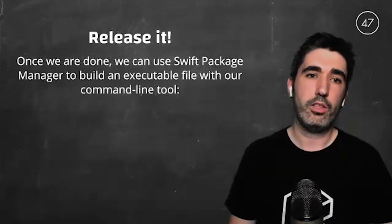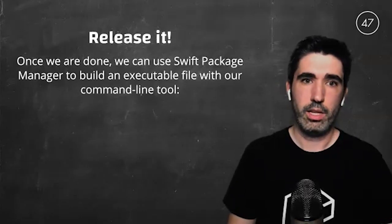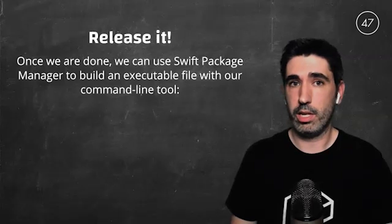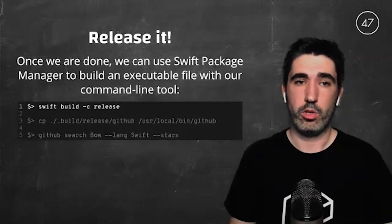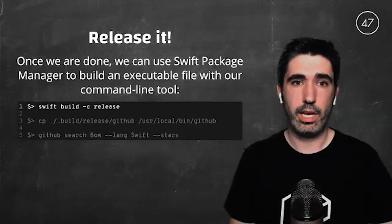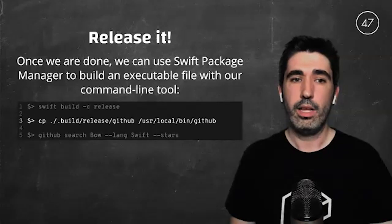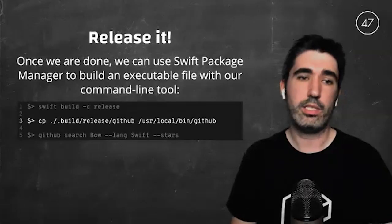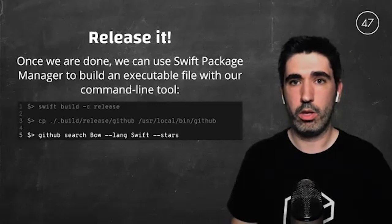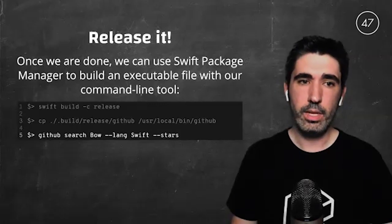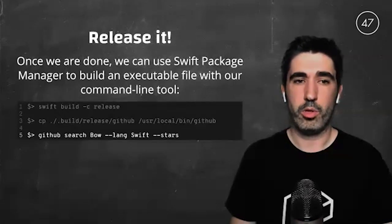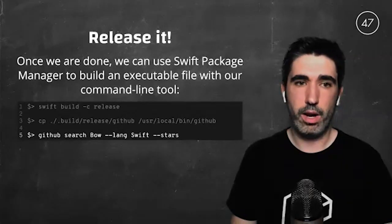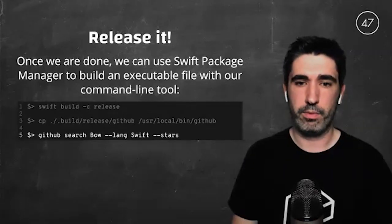We are finally done with our tool and now we want to release it. We can use the Swift Package Manager to build an executable file by running `swift build -c release`. It will create a binary file under the hidden `.build/release` folder that we can copy to `/usr/local/bin`, for instance, to have it available across our computer. This is better than typing `swift run GitHub search` with arguments every time.